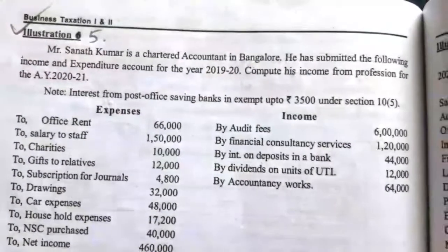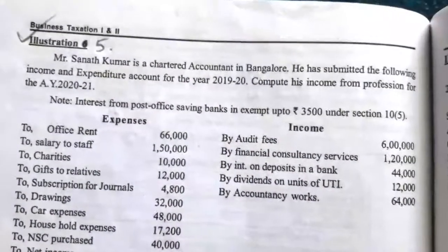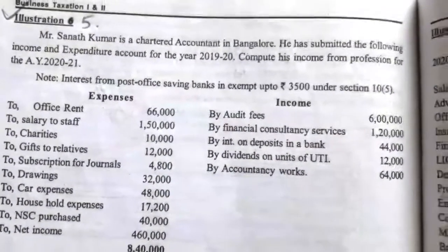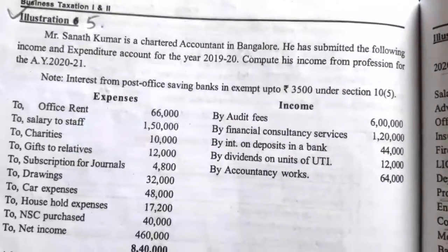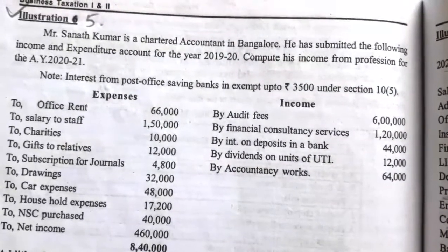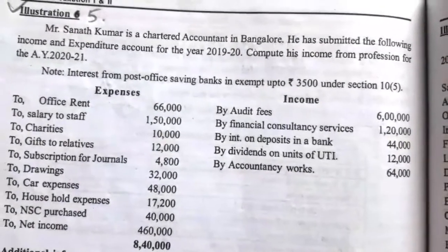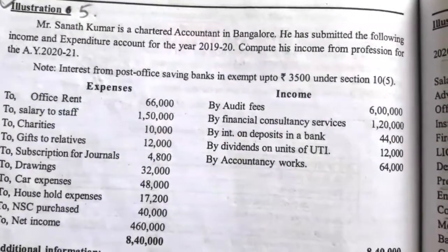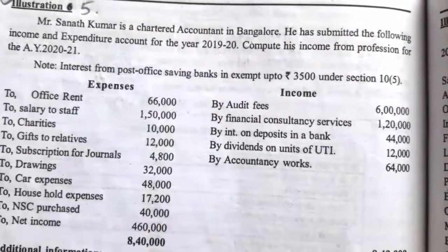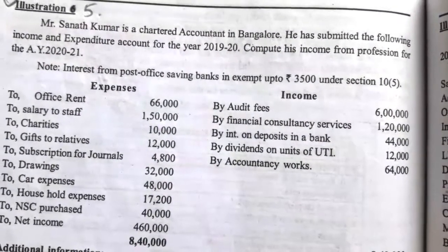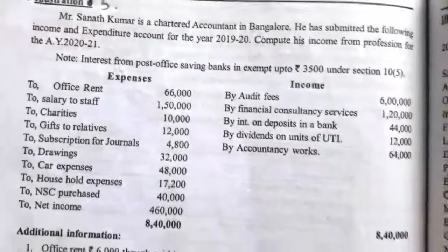Hello students. Now we will see the next illustration, illustration number 5. Mr. Sanand Kumar is a chartered accountant in Bangalore. He has submitted the following income and expenditure account for the year 2019-20. Compute his income from profession for the assessment year 2020-21. Note: interest from post office saving banks is exempt up to Rs. 3,500 under section 10, subsection 5.